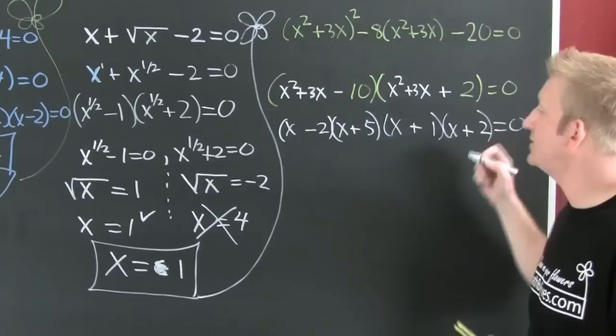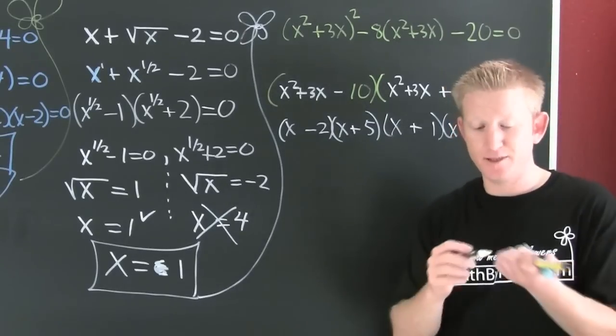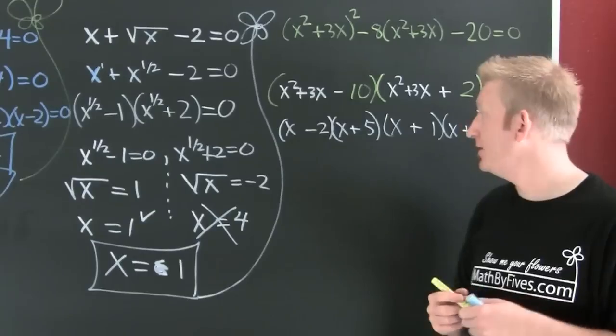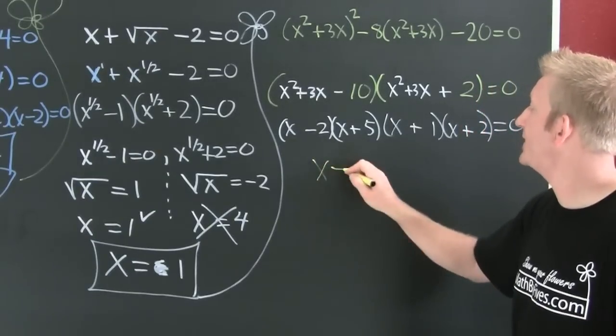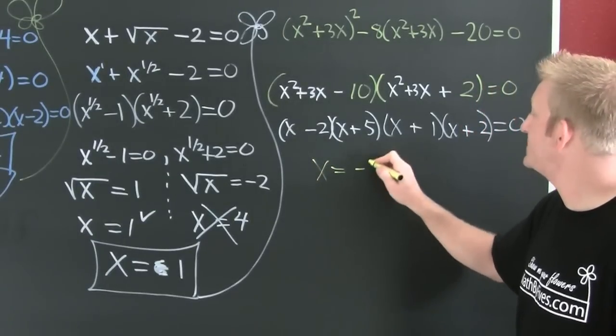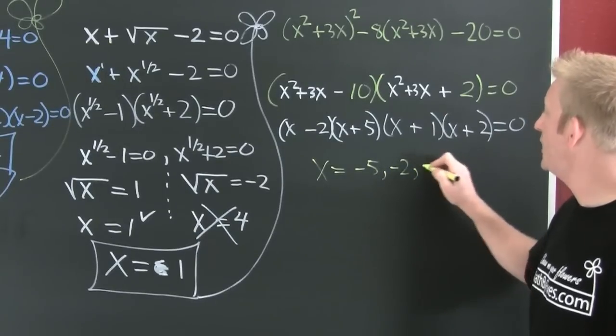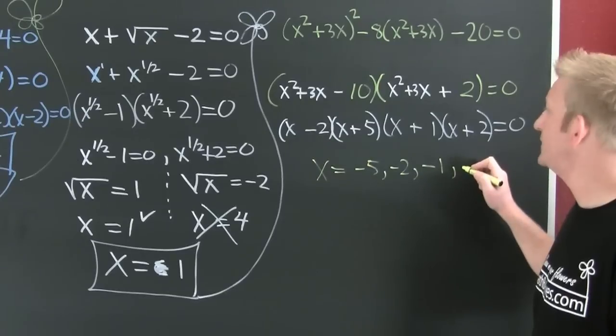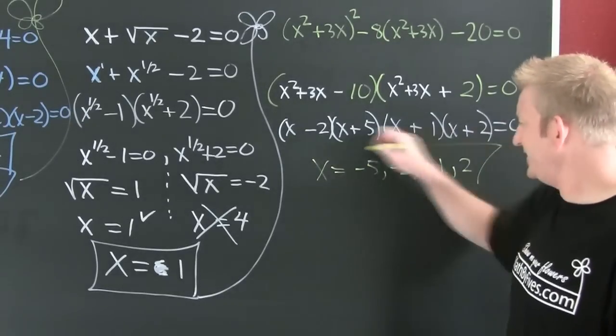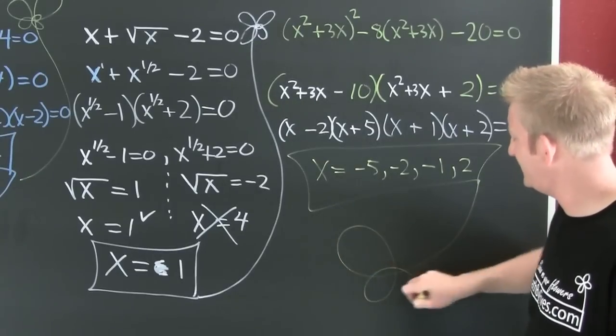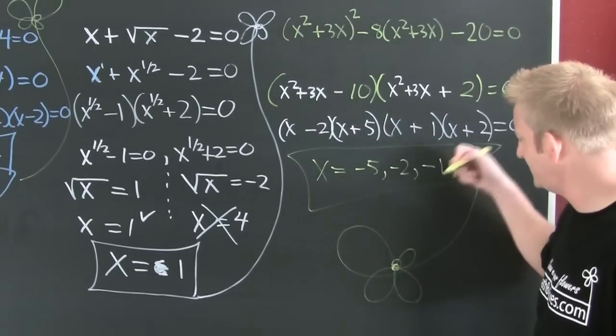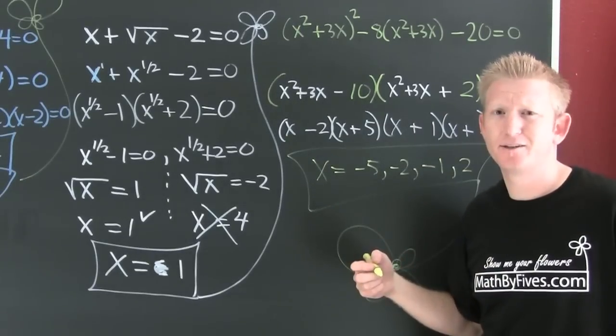Now I'm using my zero factor property once again, and here we go. We're gonna find out that x is equal to minus 5 and minus 2 and minus 1 and 2.